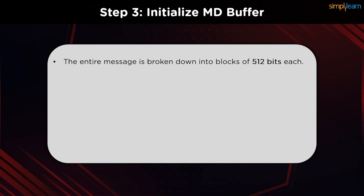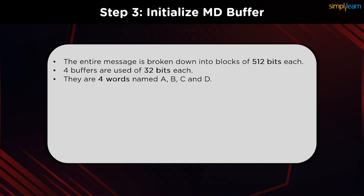The next step is to initialize the message digest buffer. The entire hashing plain text is now broken down into 512-bit blocks. There are four buffers or registers, each of 32 bits, named A, B, C, and D. These are the four words that are going to store the values of each of these sub-blocks.